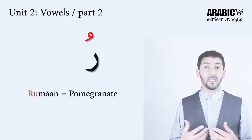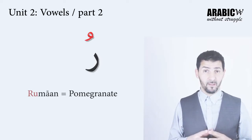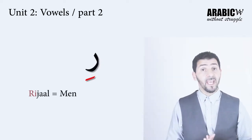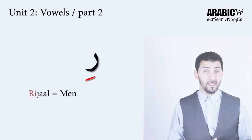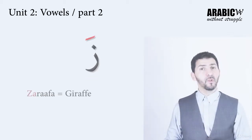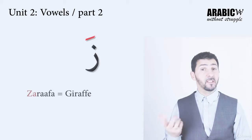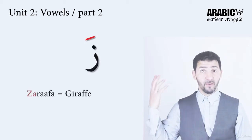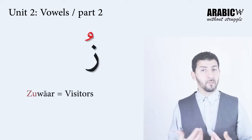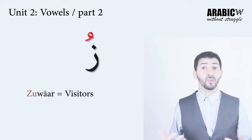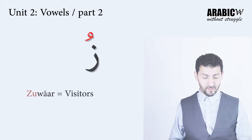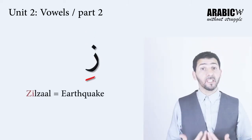راء with ضمة makes رو, like رمان. راء with كسرة makes ري, like رجال. زاي with فتحة makes زا, like زرافة — meaning 'giraffe'. زاي with ضمة makes زو, like زوار — meaning 'visitors'. زاي with كسرة makes زي, like زلزال — meaning 'earthquake'.